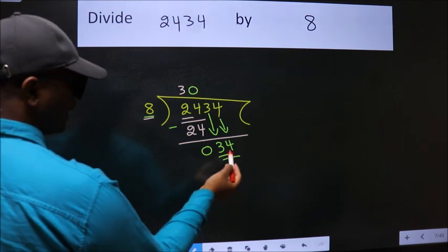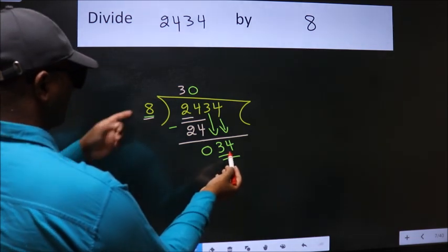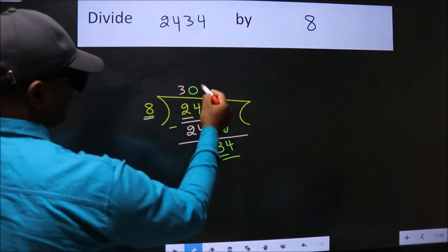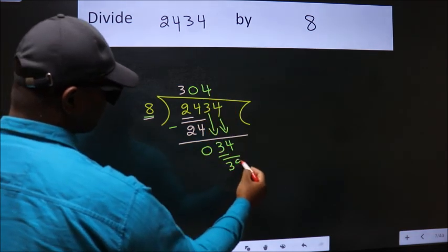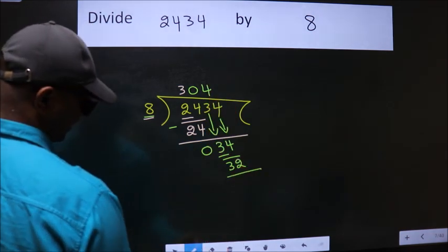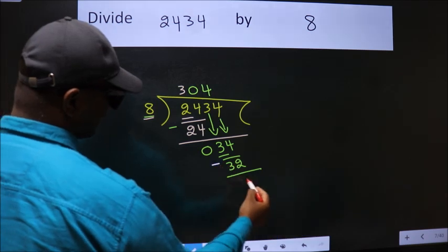So, 34. A number close to 34 in 8 table is 8 fourths, 32. Now, we subtract. We get 2.